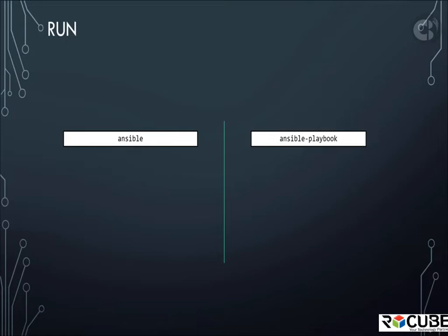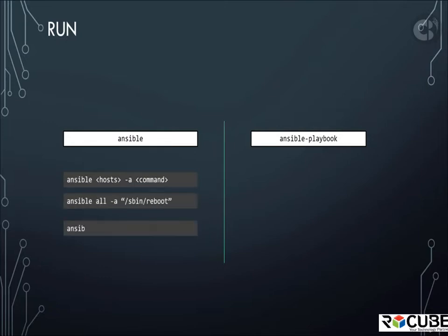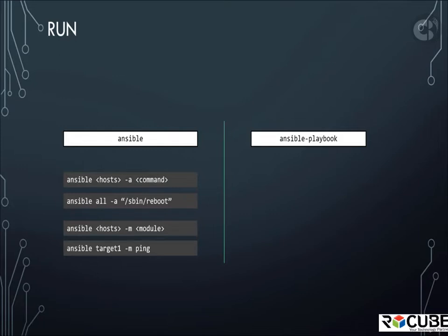Sometimes you may want to use Ansible for a one-off task, such as to test connectivity between the Ansible controller and the targets, or to run a command to shut down a set of servers. In that case, you can get away without writing a playbook by running the ansible command followed by the host and the command to reboot the hosts. This is an imperative style of execution with no playbooks involved — you're running separate ansible commands for each operation.